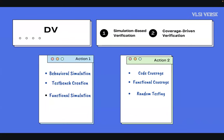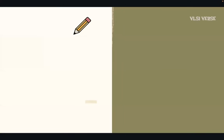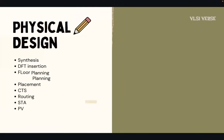So this is all about design and verification. If you love coding, writing test benches, and designing using Verilog, VHDL, or SystemVerilog, design and verification is for you. Next up is physical design — my favorite field in VLSI. Physical design is where abstract digital designs are transformed into physical layouts that can be fabricated on silicon. It involves synthesis, DFT insertion, floor planning, power planning, placement, clock tree synthesis, routing, static timing analysis, and physical verification.